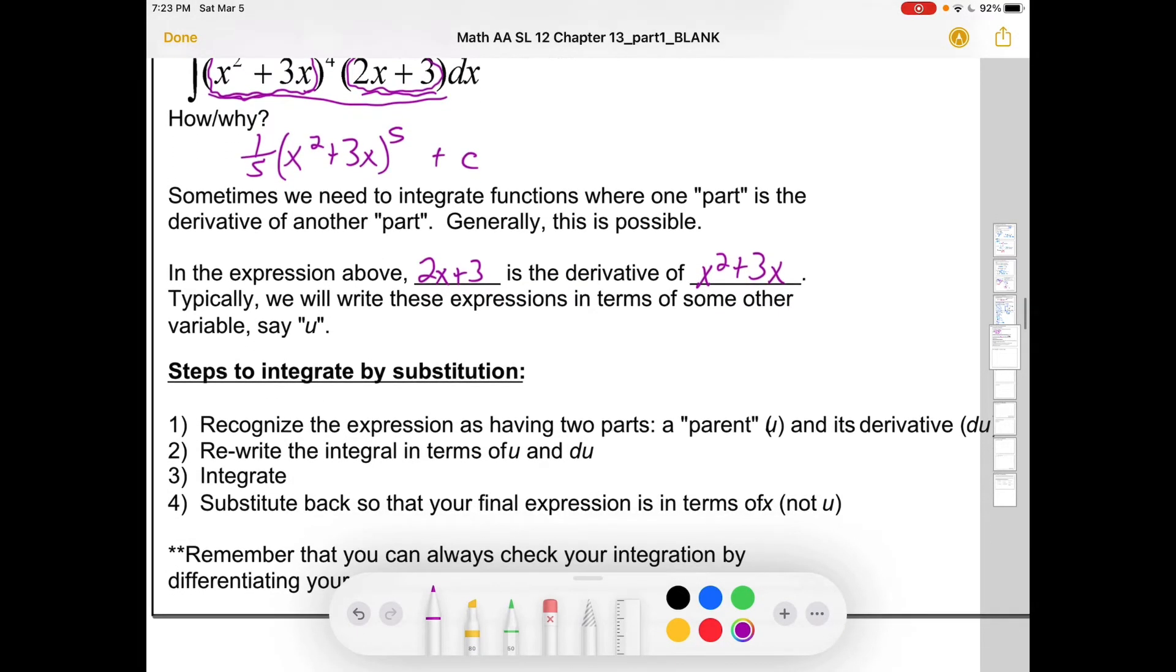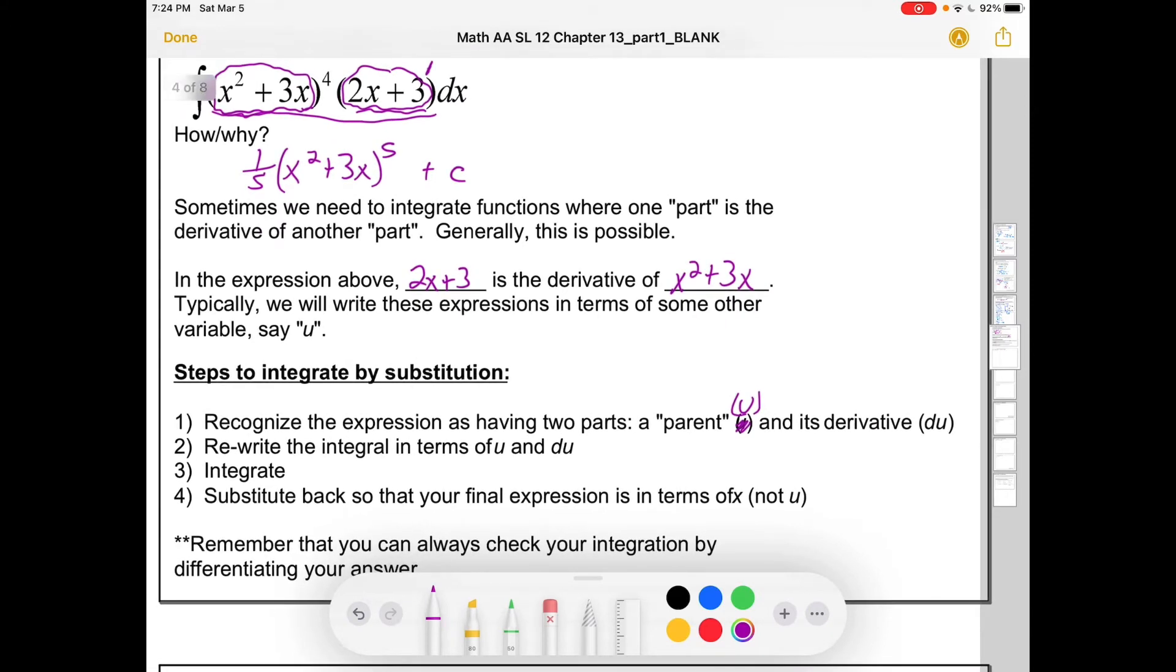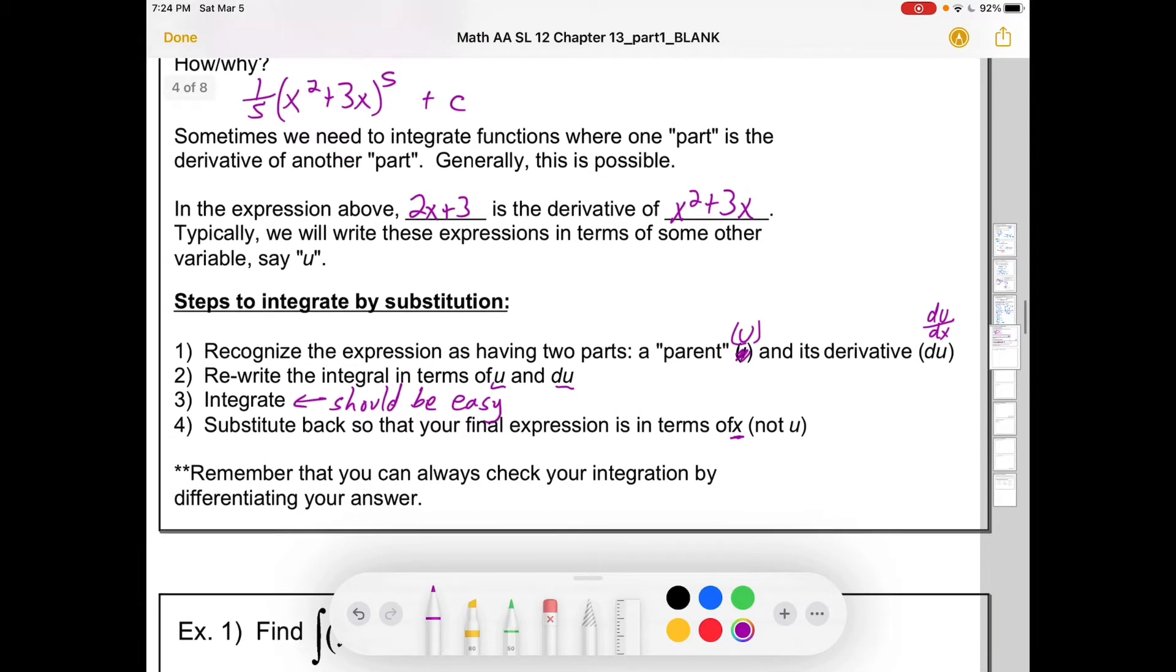So steps to integrate by substitution. First of all, we recognize the expression as having two parts: a parent that we're going to call u, and its derivative, du, or you could call it du/dx is what we're seeing. Rewrite the integral in terms of those variables that we've just kind of made up out of nowhere, and then integrate. This part, if we've substituted well, should be easy. And finally, you substitute back so that your expression is in terms of x and not in terms of u. And remember that you can always check your integration by differentiating your answer.